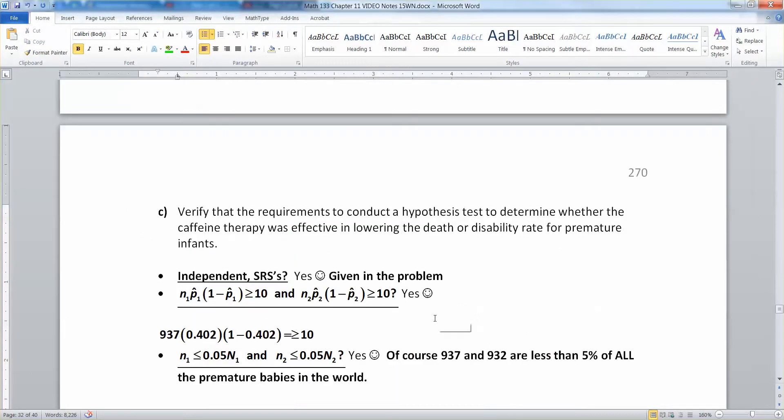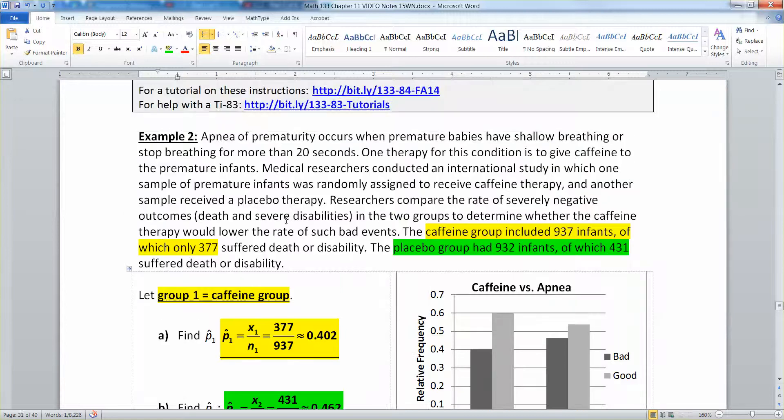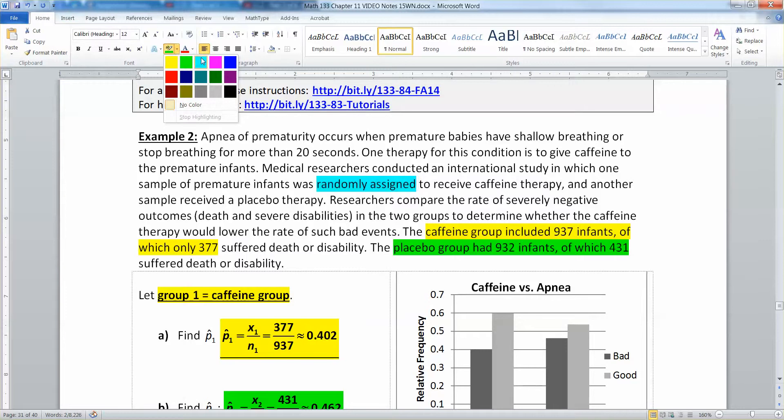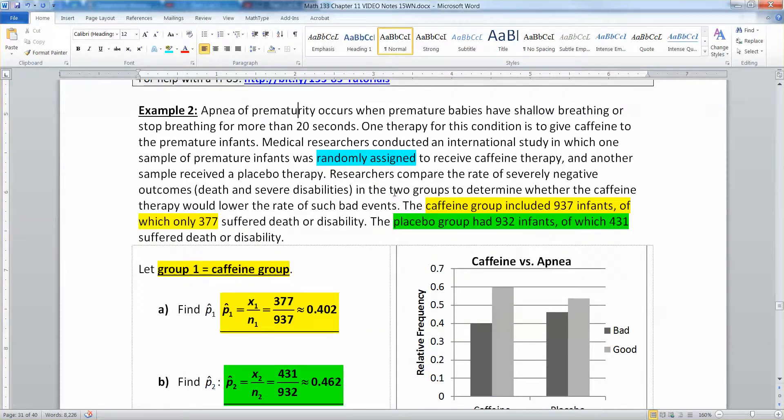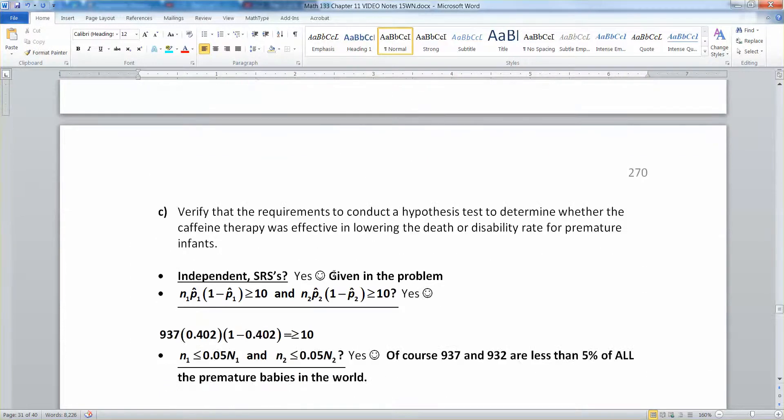We have independent, simple random samples, SRSs. That was definitely given to us in the problem. Medical researchers conducted an international study in which one sample was randomly assigned to receive caffeine therapy and another sample was randomly assigned to receive placebo. That random assignment right there is implying that, of course, these are not entirely random babies because they're premature, so there's something that they all have in common. Nevertheless, their random assignment into the two groups gives us that this is independent and random, at least enough for our purposes.